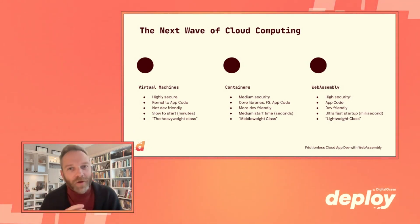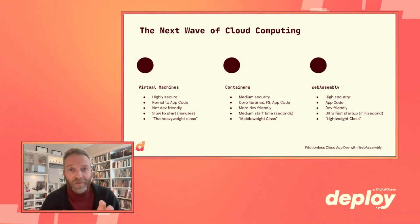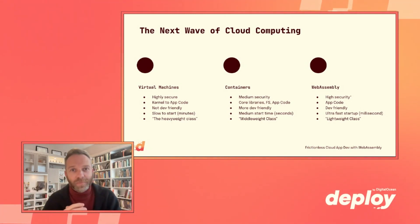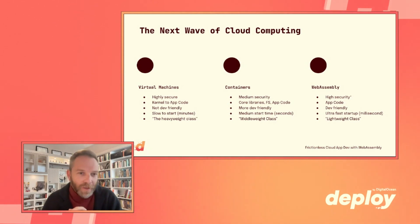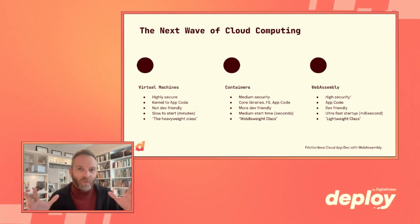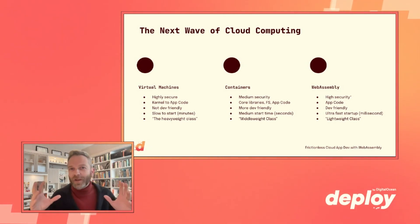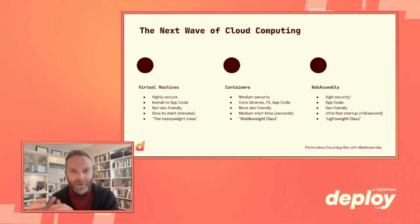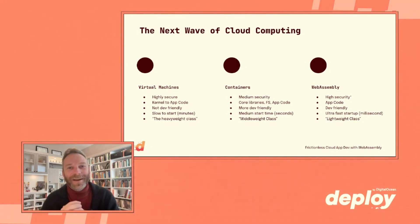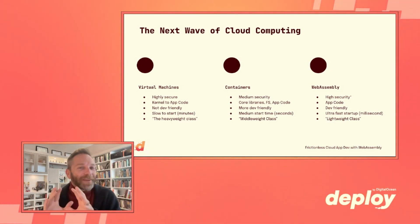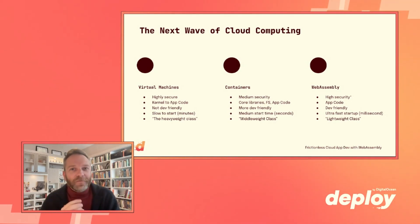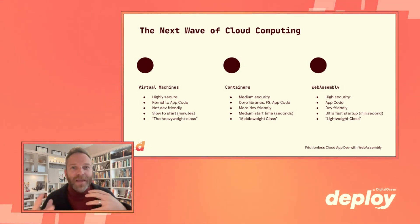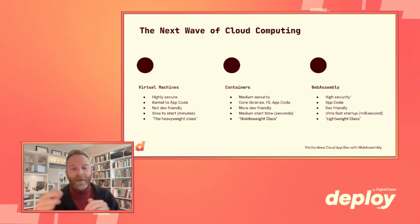The way we were thinking about compute was like this: there are really two classes of cloud compute — virtual machines and containers. Virtual machines are the big workhorse of the cloud. They're highly secure. You really package everything up from the kernel and the drivers through the utilities, libraries, and file system all the way up to your application. But virtual machines take quite a while to start — we're talking about minutes to go from booting to when your application code is actually running.